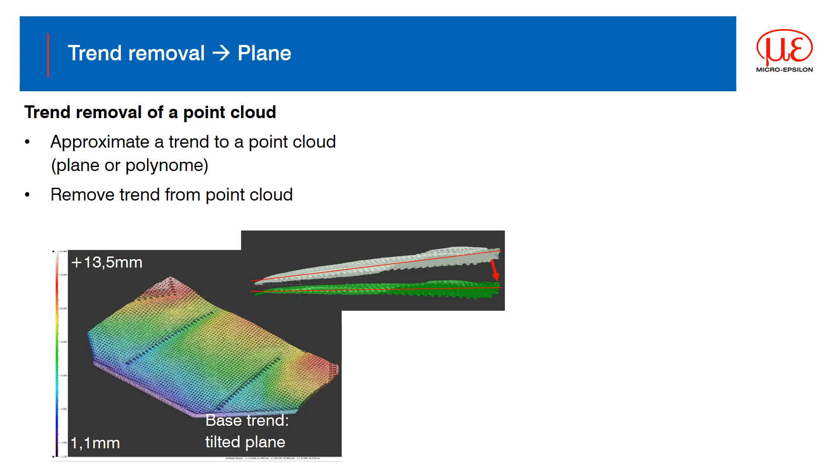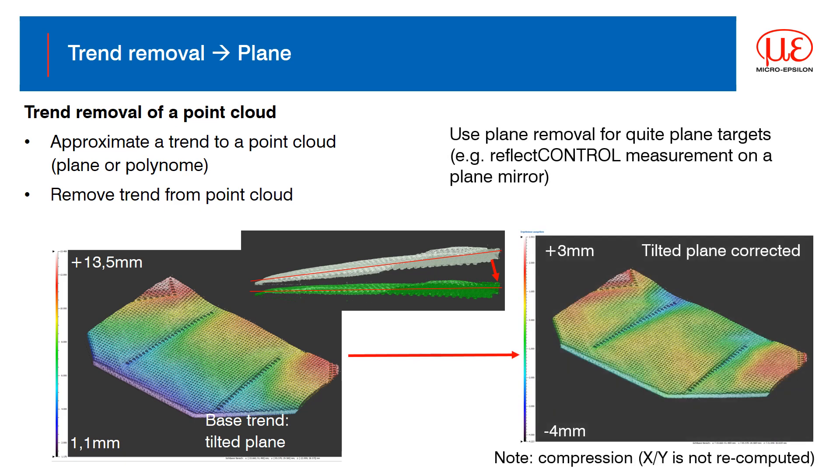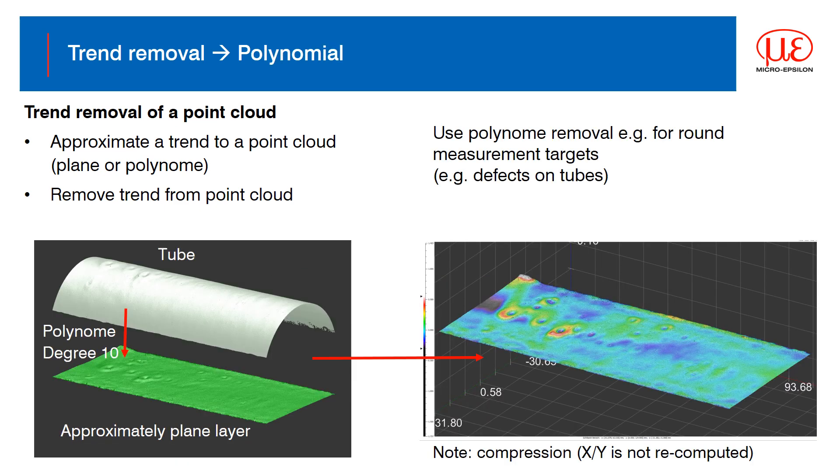Applying evaluation criteria to curved or shaped targets is always a challenge, so trend removal can also be used to remove tilts from a target. Note the reduction in the range of the Z scale. Similarly, polynomial functions can be applied to remove curves so that the target appears flattened, making the inspection or evaluation tools much easier to apply.